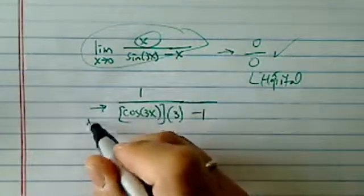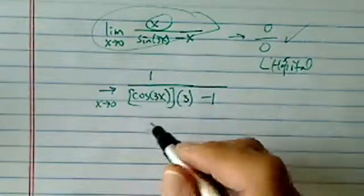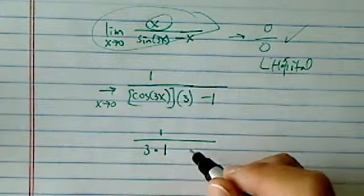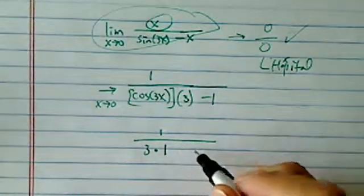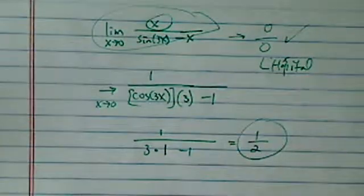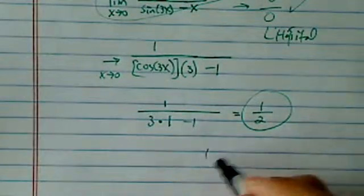So as x approaches 0, all you have here is 1 over 3 times 1, because cosine of 0 is 1, minus 1. And this one happened to be 1 over 2. Pretty simple, elegant answer.